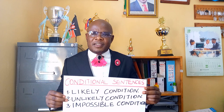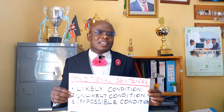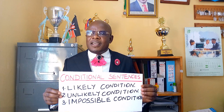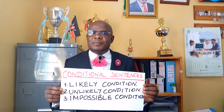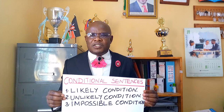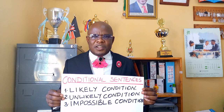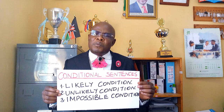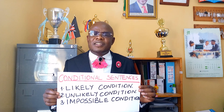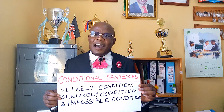Conditional sentences, like the name suggests, depict those actions that have got a condition to be met in order for a particular action to take place. Conditional sentences are grouped into three: number one, the likely condition; number two, the unlikely condition; and number three, the impossible condition. The likely condition represents those actions that are highly likely to happen. The unlikely conditions represent those actions that may not happen — the chances are a bit slim. The impossible conditions represent those actions that cannot happen and are irreversible.